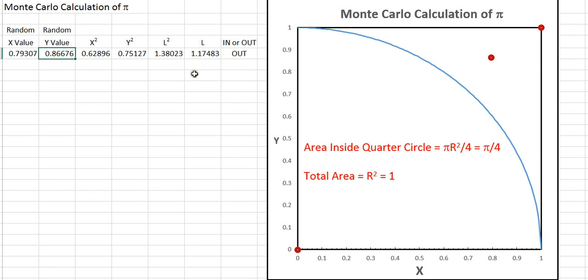And of course, if l is greater than 1, the point is outside the circle. And if it's less than or equal to 1, it's inside the circle. So this particular one is out.